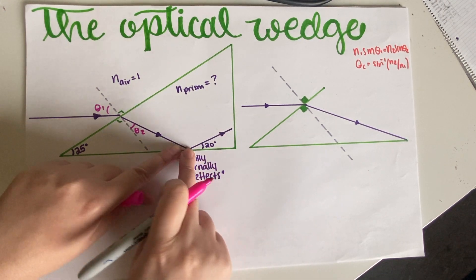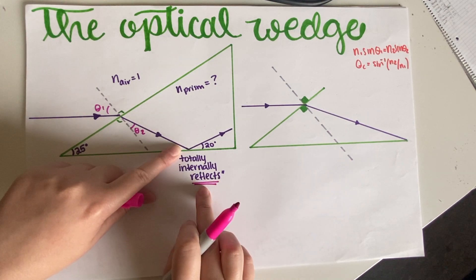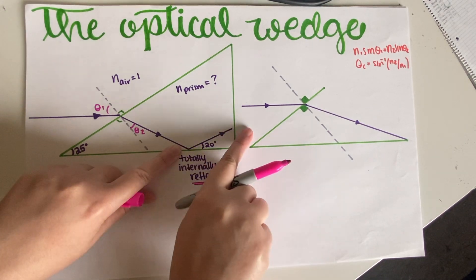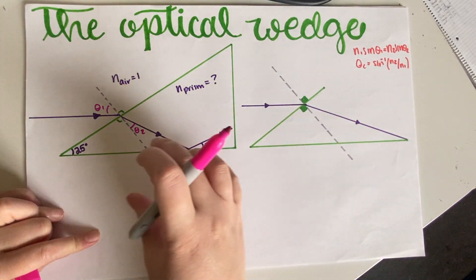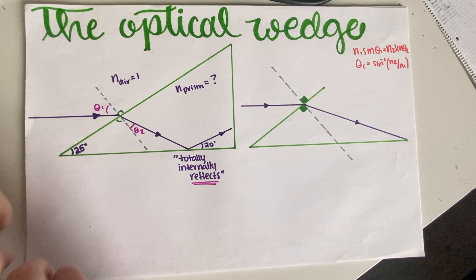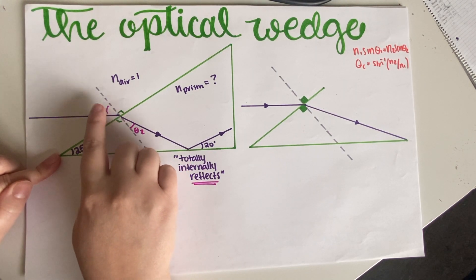It hits—we don't have this angle, I'm going to label it angle number two—and then this ray becomes the incident ray because it's going to hit again, except it doesn't go out of the material. It totally internally reflects, so it doesn't go out, it just bounces off.